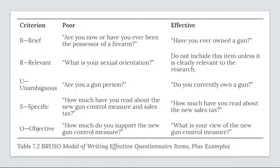Writing Effective Items. A rough guideline is provided by the BRUSO model, an acronym standing for Brief, Relevant, Unambiguous, Specific, and Objective. Effective questionnaire items are brief and to the point, avoiding long, overly technical, or unnecessary words, making them easier to understand and faster to complete. They are also relevant to the research question—if a respondent's sexual orientation, marital status, or income is not relevant, items on these topics should not be included, as this keeps the questionnaire faster to complete and avoids annoying respondents with questions they'll rightly perceive as irrelevant or nosy.